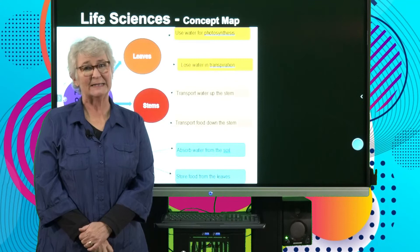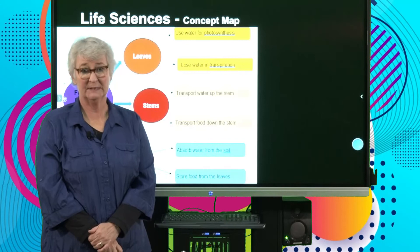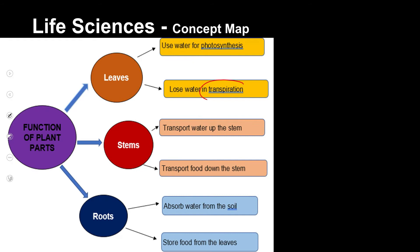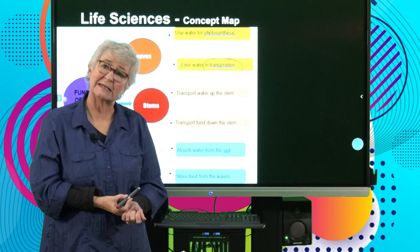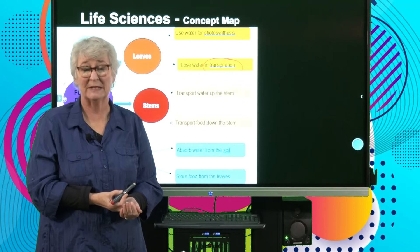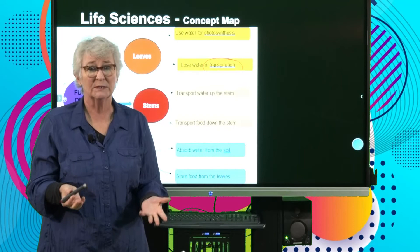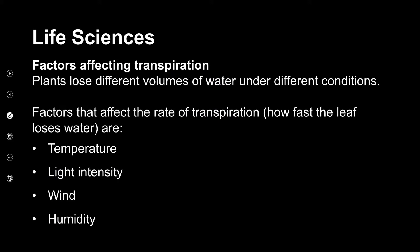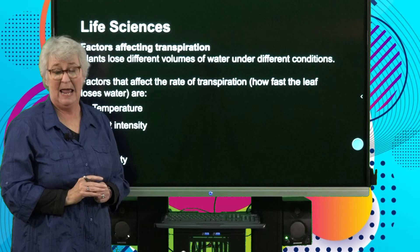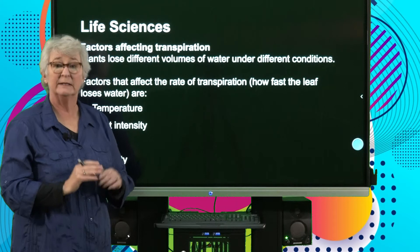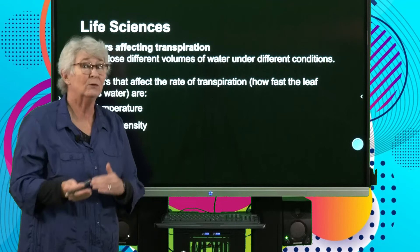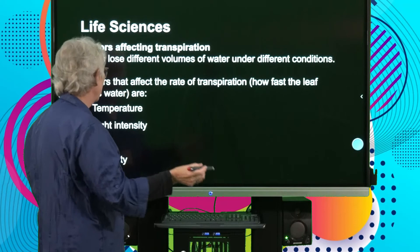Welcome back to our lesson on life sciences, where we are looking at how leaves lose water in the process of transpiration. We've already looked at how the water moves out of the leaf, and we are now going to look at what makes plants lose water quickly — in other words, the factors affecting transpiration. There are certain environmental factors which will make plants lose water more quickly or more slowly.